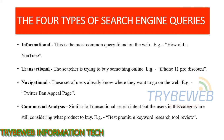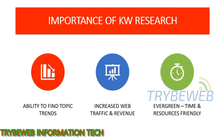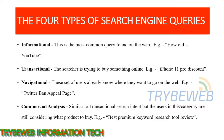Transactional queries are when the searcher is trying to buy something online. Most of the time the searcher already knows what they want to buy; they just need to know where to buy it and how much it costs. Examples: PlayStation 5 price, Premium VPN coupon code, iPhone 11 Pro discount.